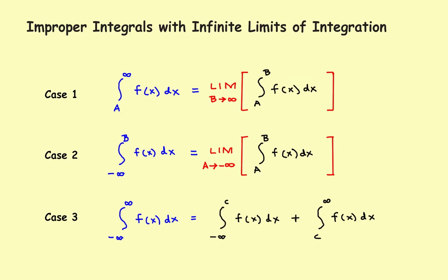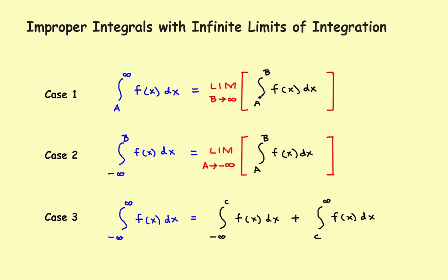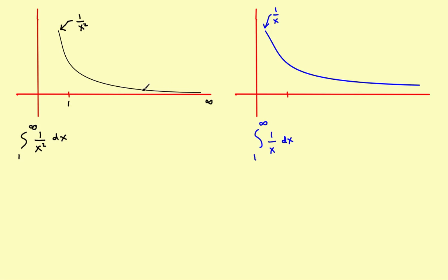Let's look at some examples. We've got two functions — in both cases starting at 1 going off to positive infinity. The first function is 1 over x squared, the second is 1 over x. One will be convergent, the other divergent. For the first example, using our rules: we pick some number b, evaluate the integral in terms of b, then take the limit as b goes to infinity. Step one: find the integral from 1 to b of 1 over x squared dx. Rewriting x squared as x to the negative two.